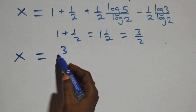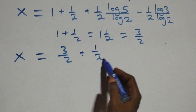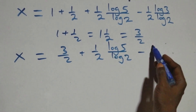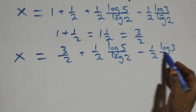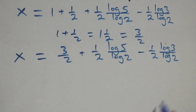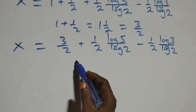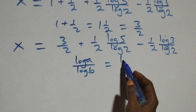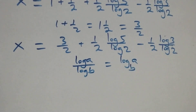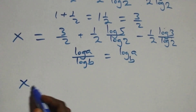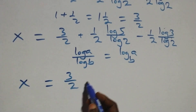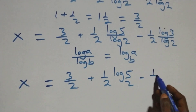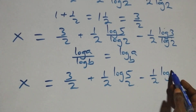Then here we apply the change of base formula: log A over log B is the same as log A to base B. So what we have becomes x equals to 3/2 plus (1/2) log 5 base 2, minus (1/2) log 3 base 2.